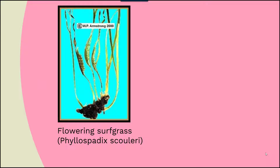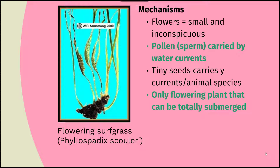Seagrass reproduction is quite unique. In this example of the flowering surf grass, those flowers are very small and inconspicuous. The pollen — equivalent to sperm — is carried by water currents, and the tiny seeds are carried by currents as well as animal species. Only flowering plants that can be totally submerged are going to be successful in reproduction.